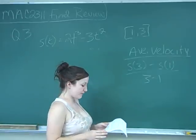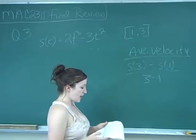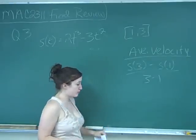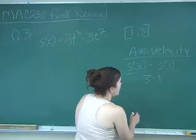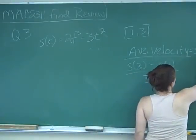Find the average velocity of the object on the time interval from 1 to 3 and the instantaneous velocity of the object at t equals 2. So first we're going to find the average velocity and the average velocity is the same thing as the slope.